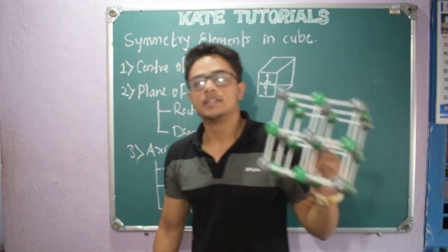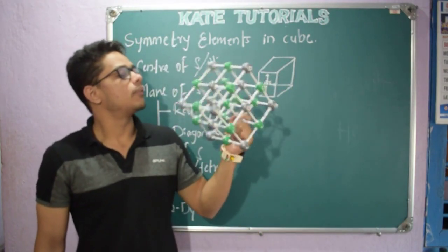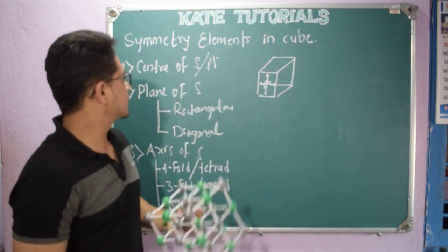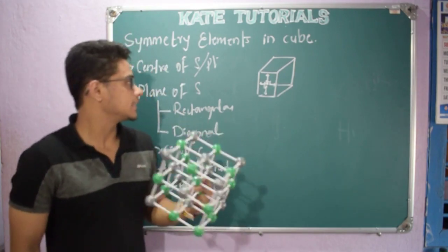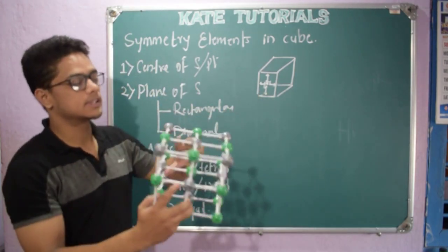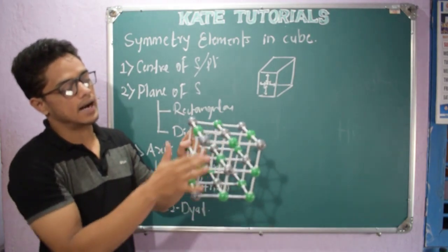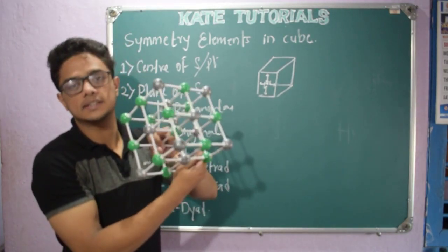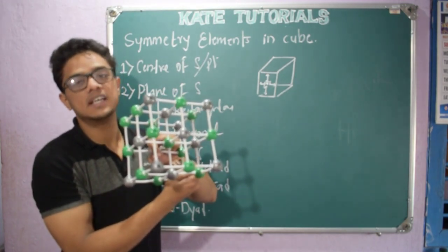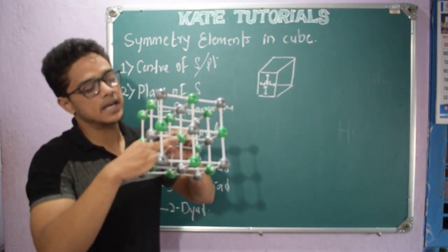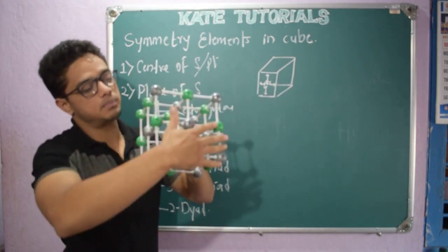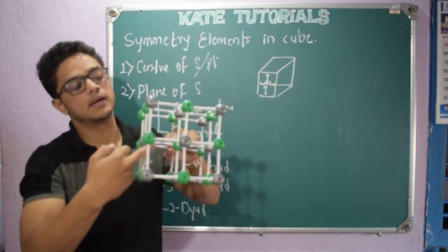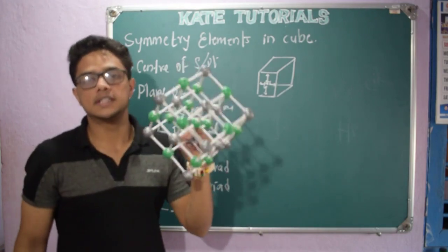Let us see this center of symmetry using the sodium chloride structure. This is also a cube where length, breadth and height are all the same. See this green point at the center — this is the center of symmetry. Because from this green point, every plane — this plane, this plane, the above plane, and the below plane — all are equidistant. The same bond length is there everywhere. So this is the center of symmetry.